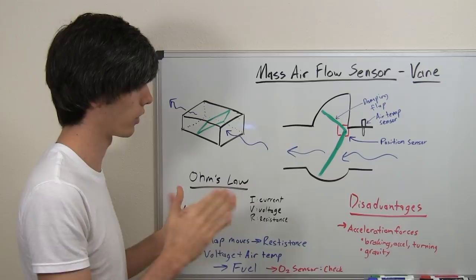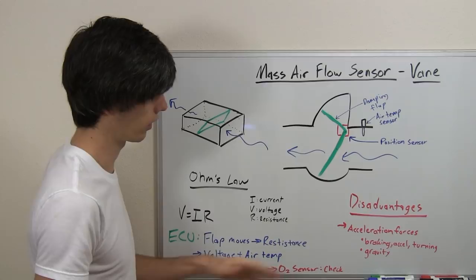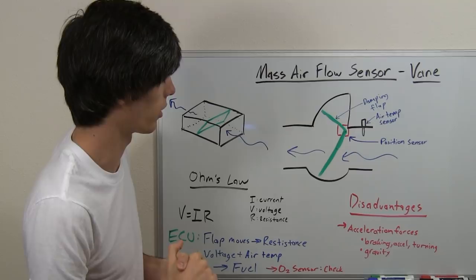Now, as a check, you've got the O2 sensor which is in the exhaust and so that will back up the ECU's reading and make sure there is too much oxygen or it's burning lean or burning rich. So that will be the check and I can explain an O2 sensor in a future video.